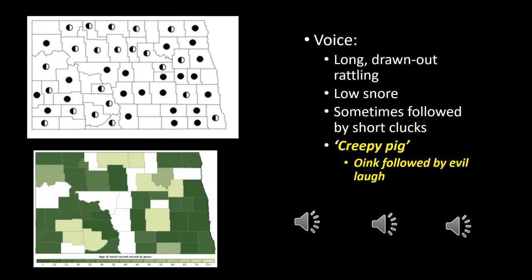They're often easier to find than chorus frogs given their larger size. Their call is very interesting — a long drawn-out rattling followed by a low snore, and sometimes short little clucks. It's much more variable than some other calls. I always call leopard frogs 'the creepy pigs' — sort of oinks followed by an evil laugh: long oinks and then a quick evil laugh.